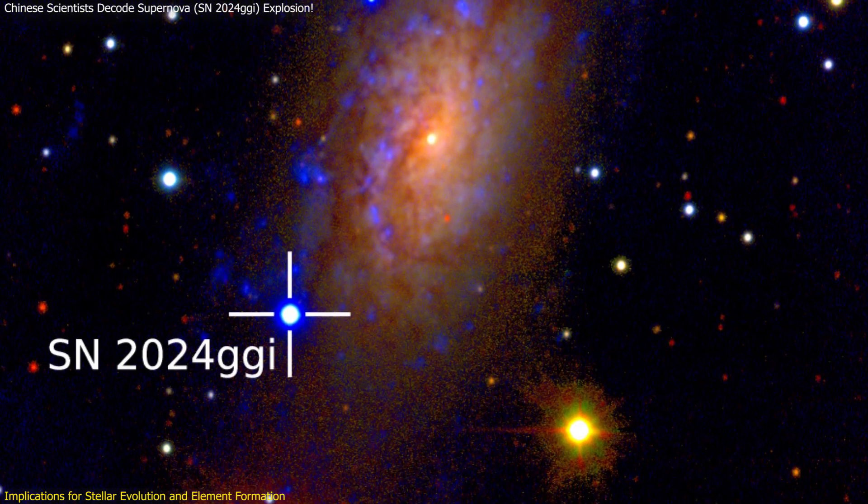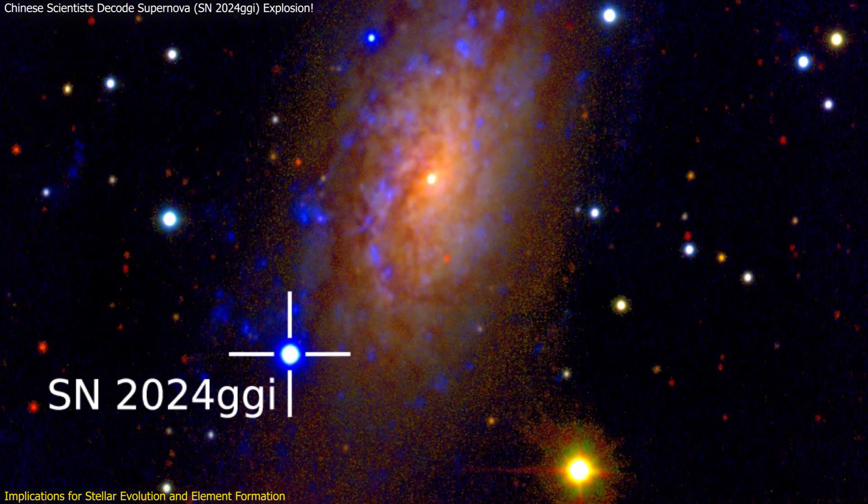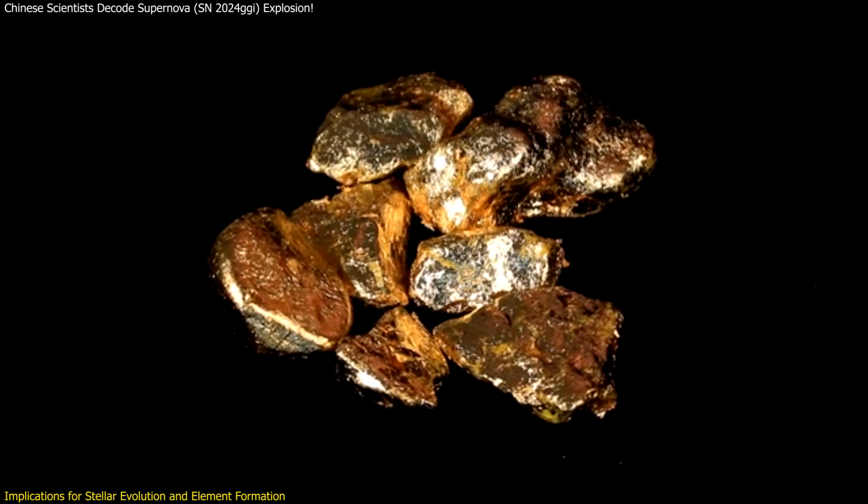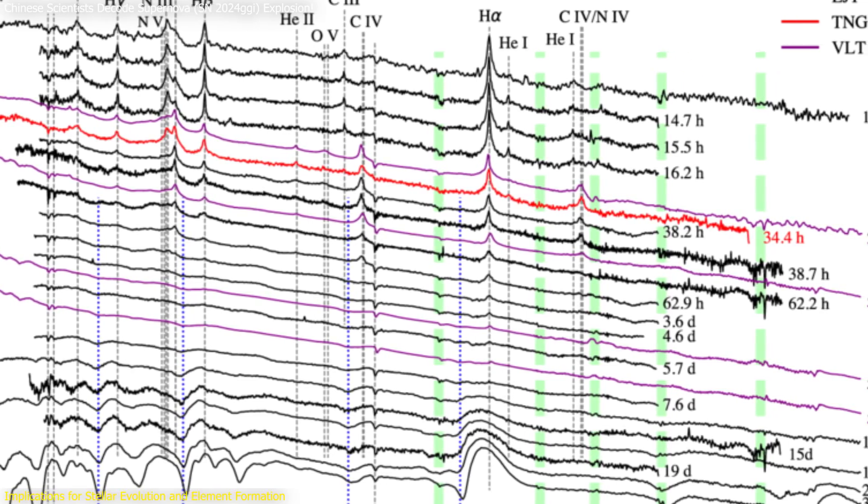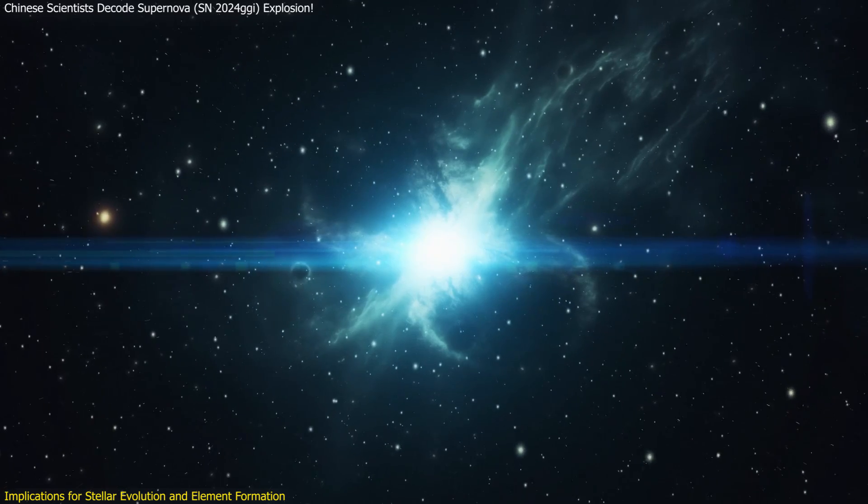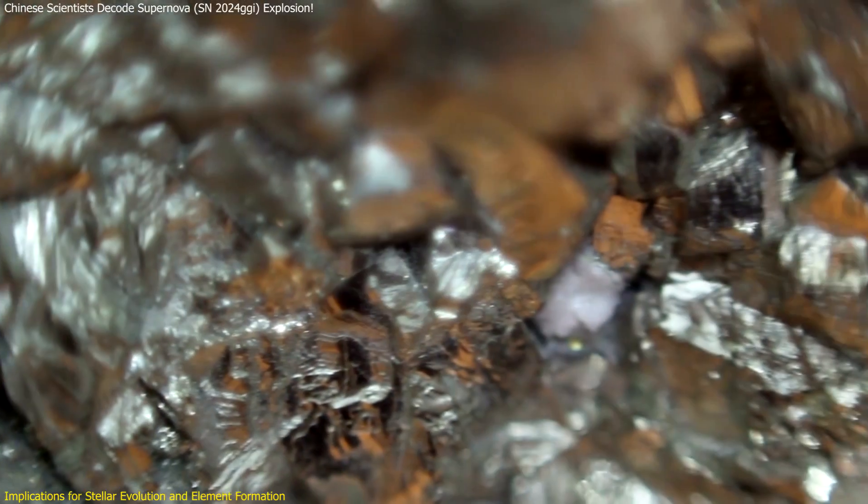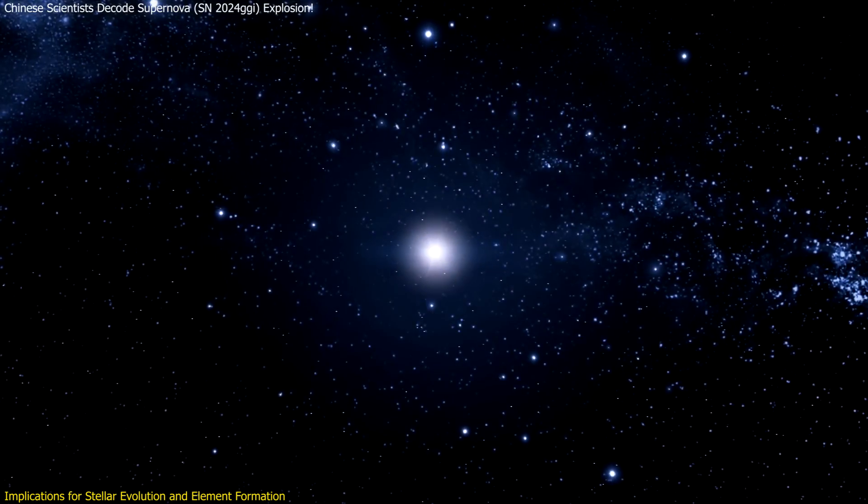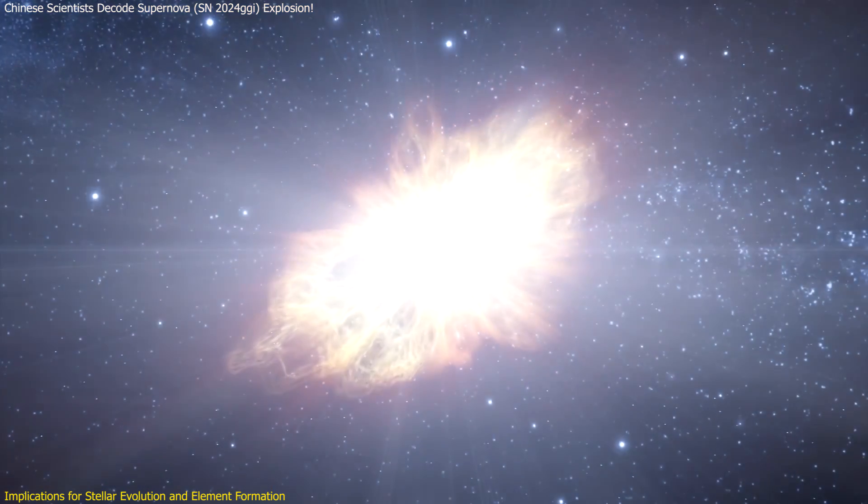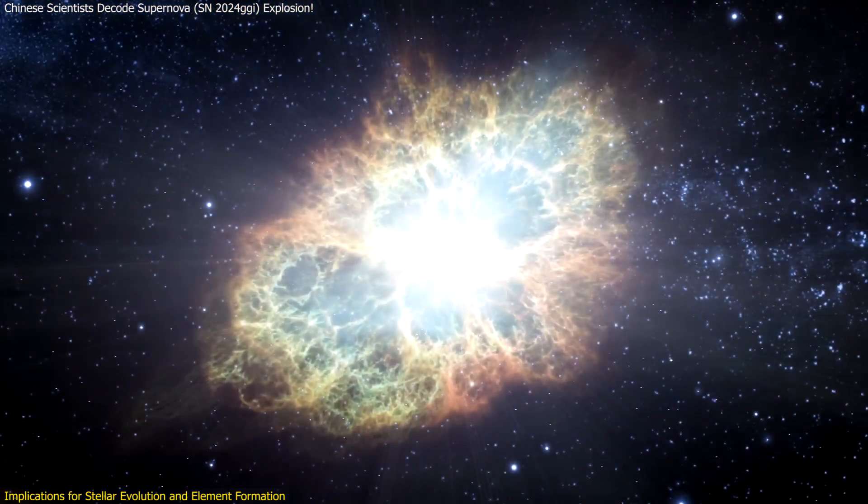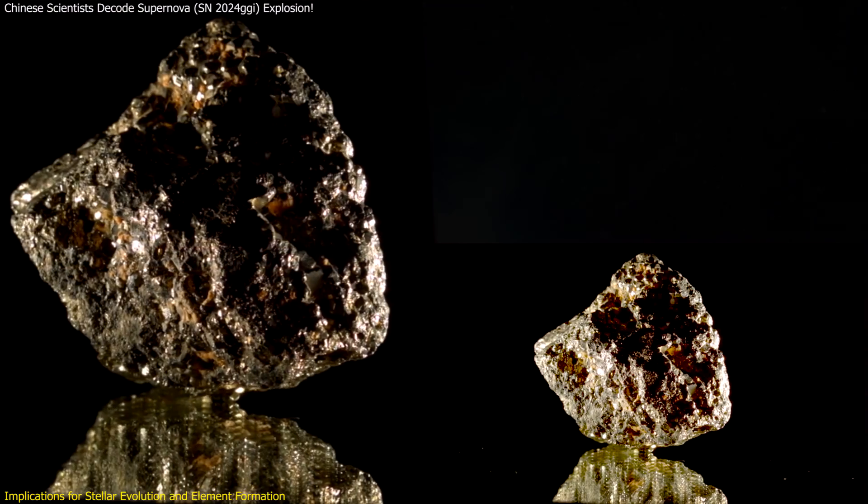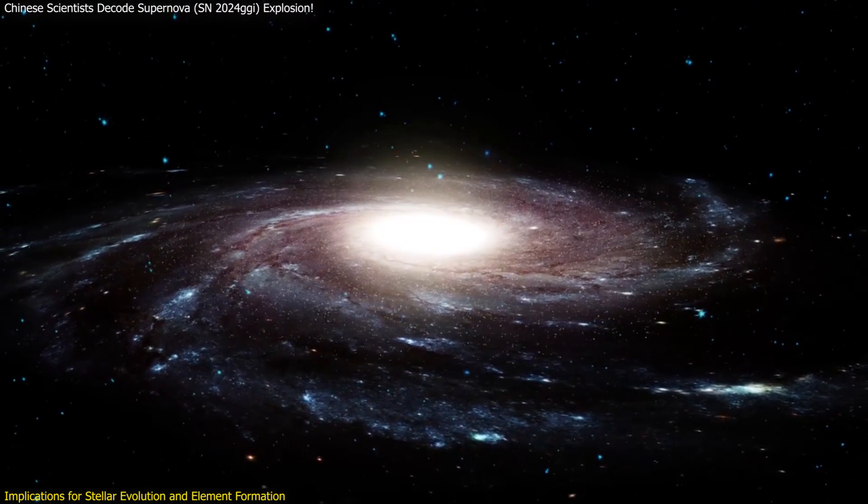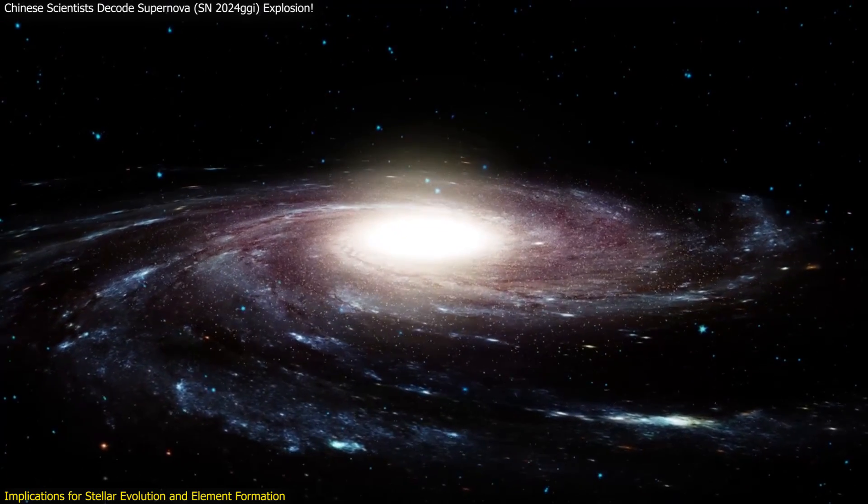The findings from SN 2024 GGI have significant implications for our understanding of stellar evolution and the creation of heavy elements. By examining the spectra and the propagation of the shock wave, scientists can reconstruct the final stages of the star's life and the processes that lead to the synthesis of heavy elements. This enhances our understanding of how supernovae contribute to the cosmic abundance of elements like gold and silver, and is crucial for developing more accurate models of stellar evolution and the chemical evolution of galaxies.